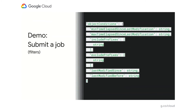You can also submit information about what source objects you want us to select. For instance, you can choose objects based on last modified time, or use include and exclude prefixes to choose objects based on their name. For example, you could choose an include prefix of 'foo/', and that would mean we'd pull all objects whose prefix starts with 'foo/'.